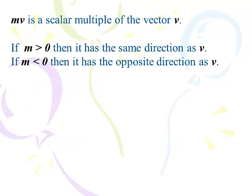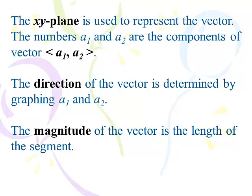mv is a scalar multiple of a vector v. If we want to double or triple a vector, we multiply it by 2 or 3. If we multiply by a positive number, the result has the same direction as v. If we multiply by a negative value, it's a scalar multiple in the opposite direction. We'll use the Cartesian plane, the xy plane, to represent the vectors.